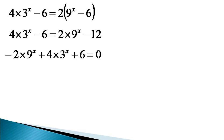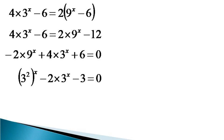We divide both sides by minus 2 and also express 9 in the form of 3 squared, to get the equivalent equation as 3 squared raised to the power x minus 2 times 3 raised to the power x minus 3 equals 0.